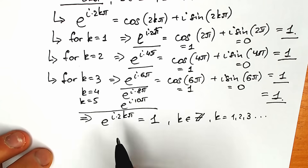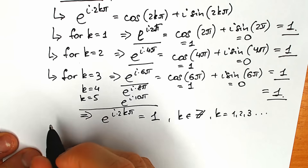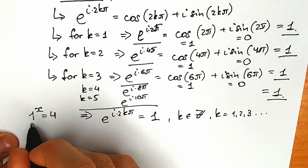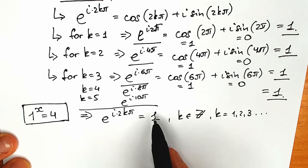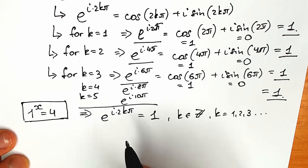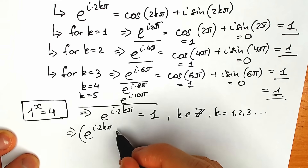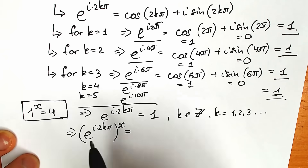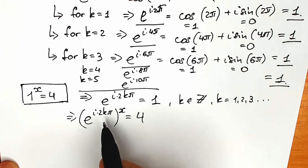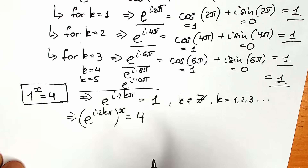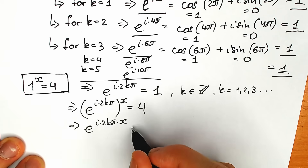This expression with the imaginary unit equals 1, so we can substitute it for the 1 in our original question. Don't forget: our original question was 1 to the power x equals 4. We can change this 1 by e to the power i times 2kπ, because that expression equals 1 when k is an integer. So as a result we have: e to the power i times 2kπ, raised to the power x, equals 4. Now let's solve this equation.